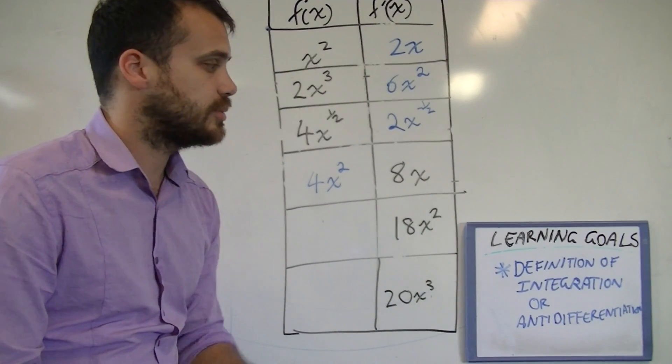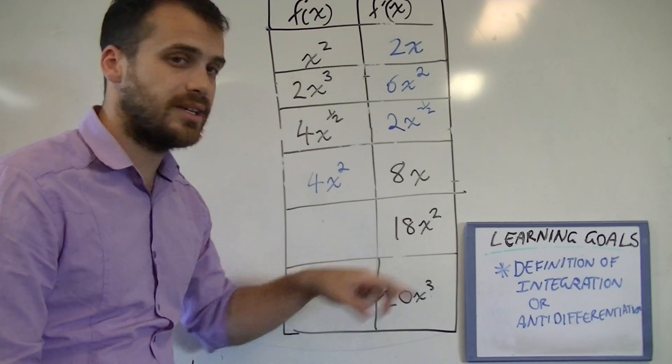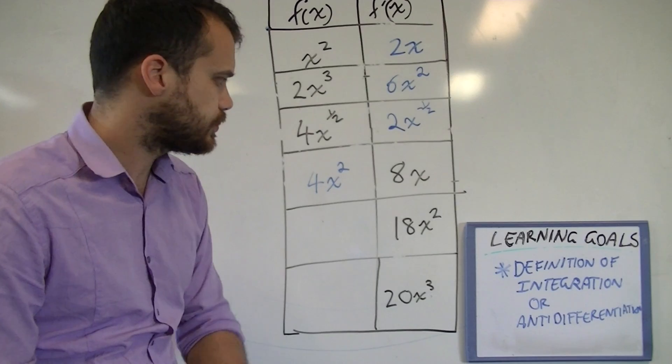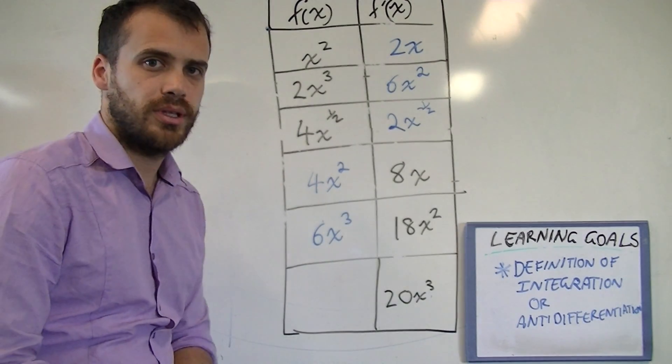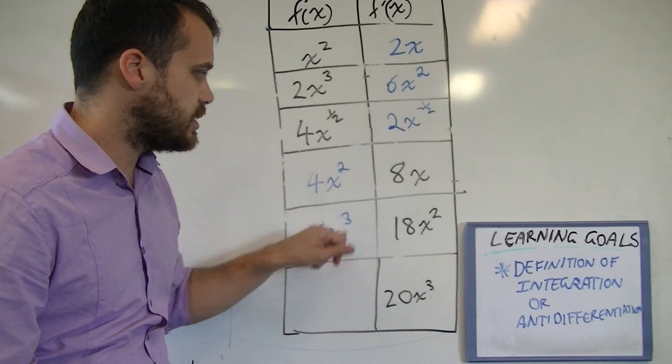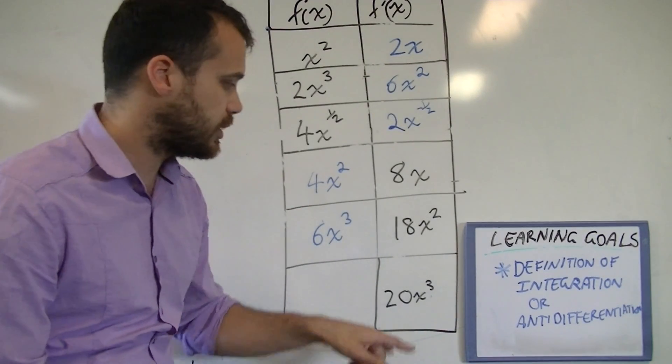18x squared. What would the integral of 18x squared be? 6x cubed. Now again, take a look. 6 times 3, that's 18x squared.